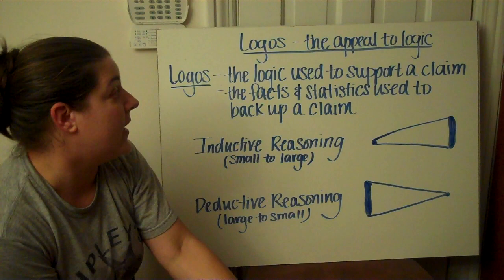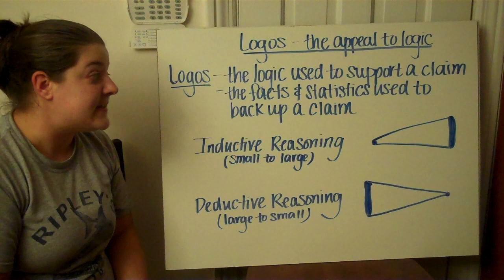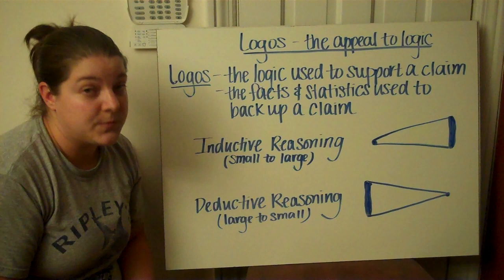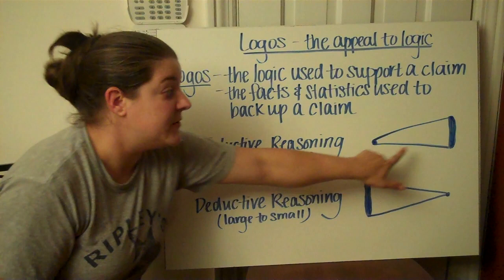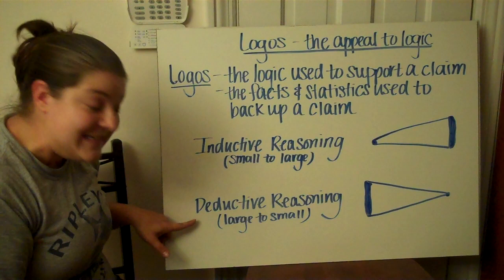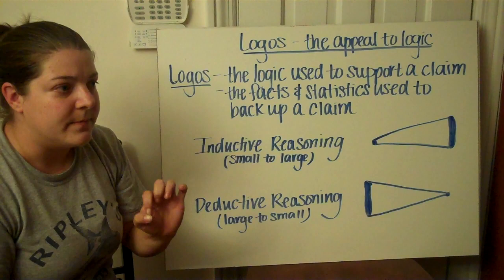Now we'll move on to Logos. Logos is the appeal to logic. It is the logic used to support a claim, as well as facts and statistics used to back up a claim. There are two basic kinds of reasoning in Logos. The first is inductive reasoning, which goes from small to large — from a small, singular concept to a large, broad generalization. The second is deductive reasoning, which goes from large to small — from a large premise, concept, or idea to a singular, small application of that concept.